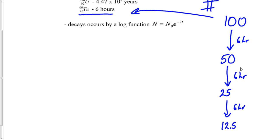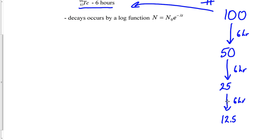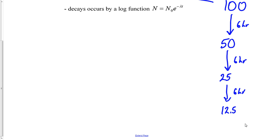An easy teacher or class might make it as simple as this — they might say: 'How much is left after 24 hours?' Another six hours: half of 12.5 is 6.25. You could do it this way as a common sense approach if everything is nice and perfect like this.